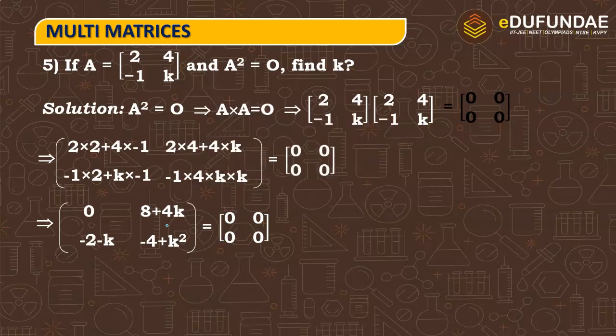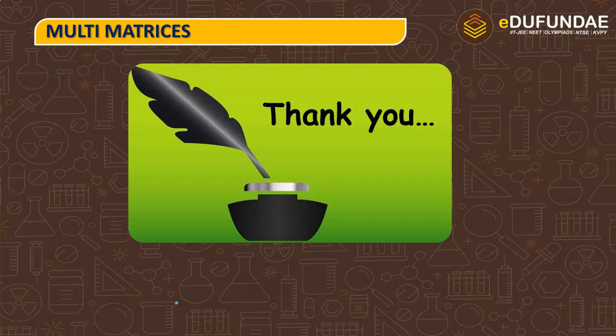So if I equate both sides, then here 8 plus 4k is equals to 0. So k value here will be minus 2. So k value is minus 2 which is our final answer. So I hope this solution is clear to everyone. I hope this session was very productive for all of you, thank you so much.